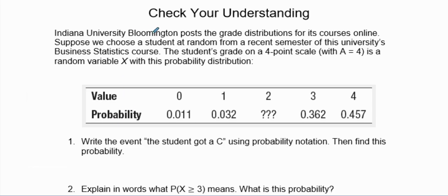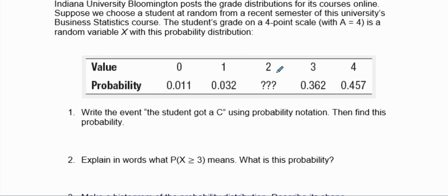Indiana University Bloomington posted grade distributions of courses online. Suppose we choose a student at random from a recent semester at the university business courses. Students' grades are on a four-point scale with a random variable X. The values are 0, 1, 2, 3, and 4.